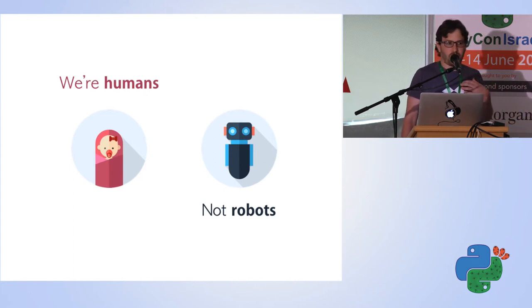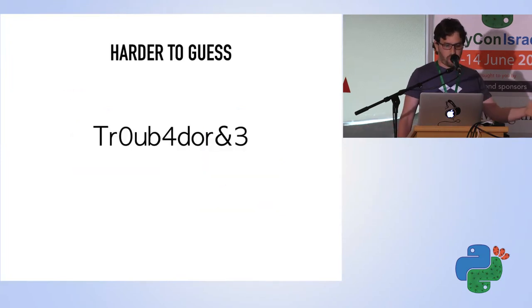I don't know about you, but for me it's impossible to remember 10 passwords with all randomized letters and numbers. So what do we do as humans? We go into some patterns. For example, troubadour ampersand 3. Let's take a look at this password and try to get a more realistic estimation.